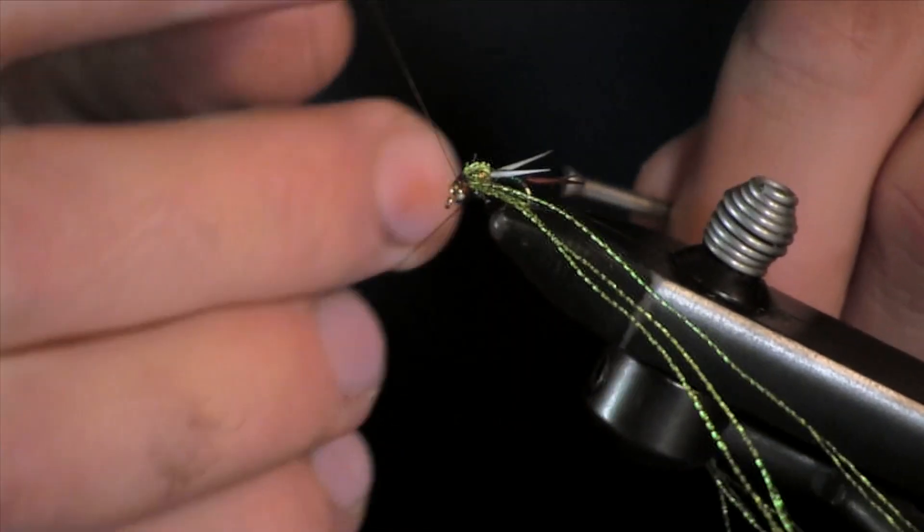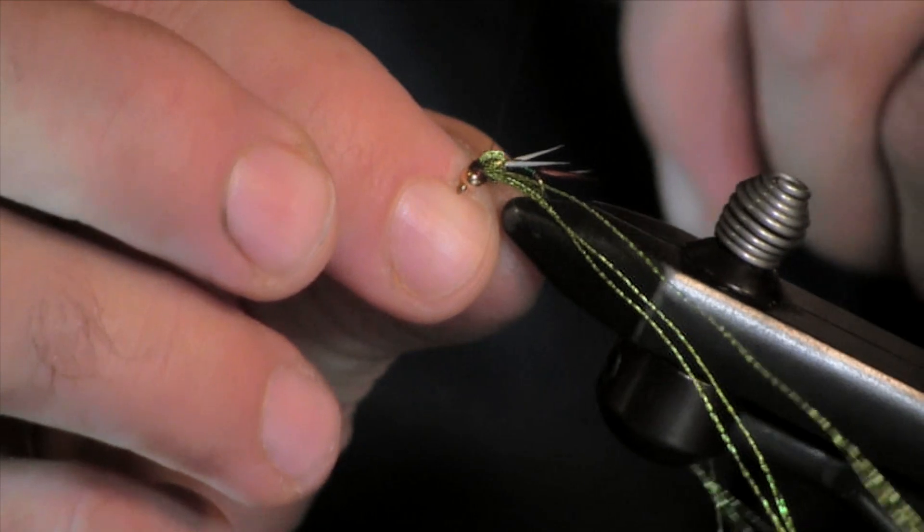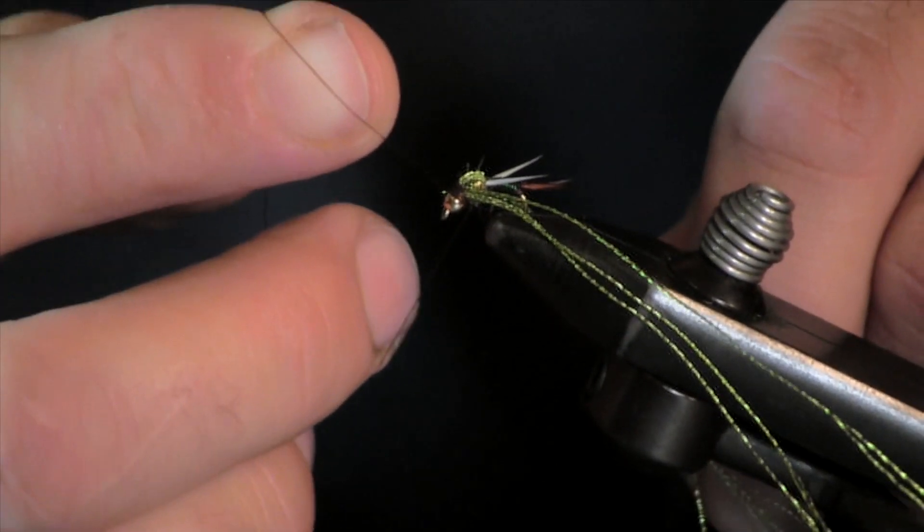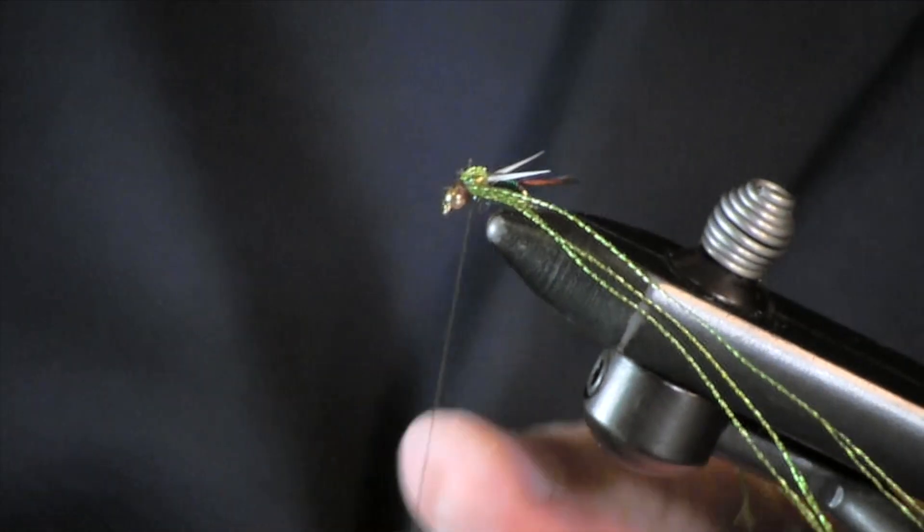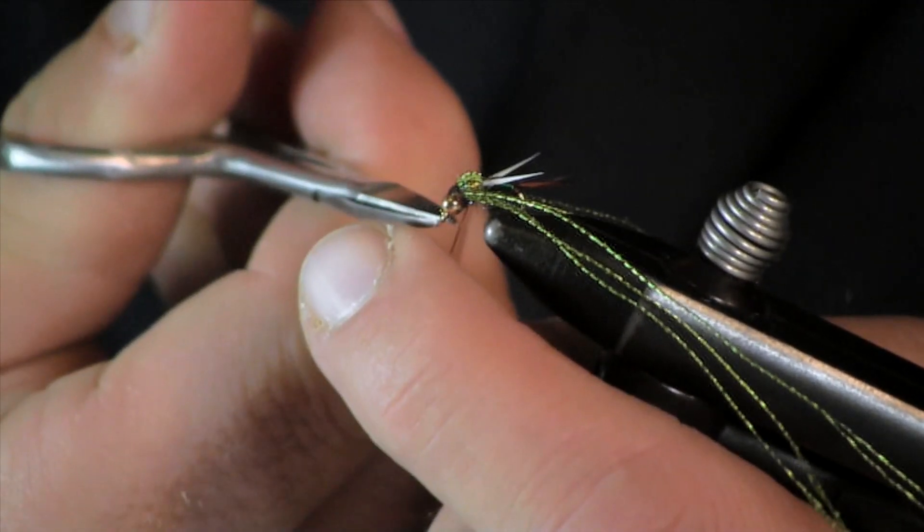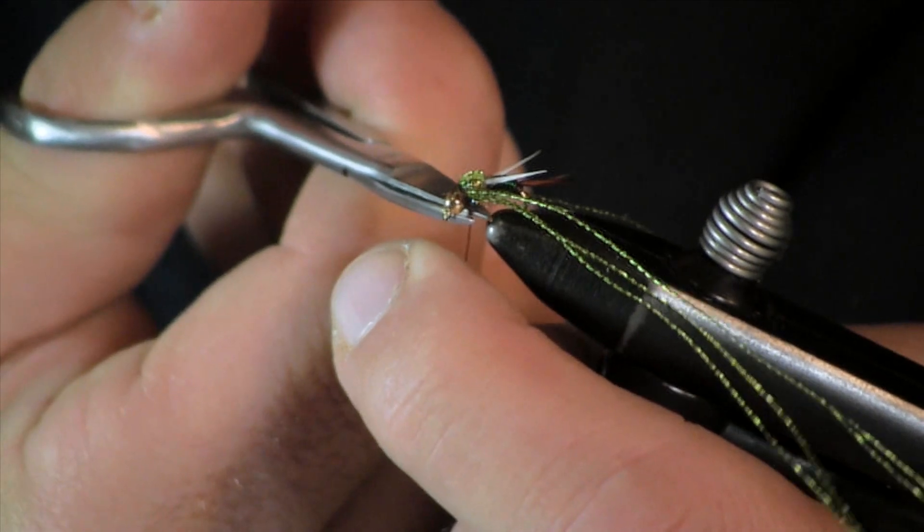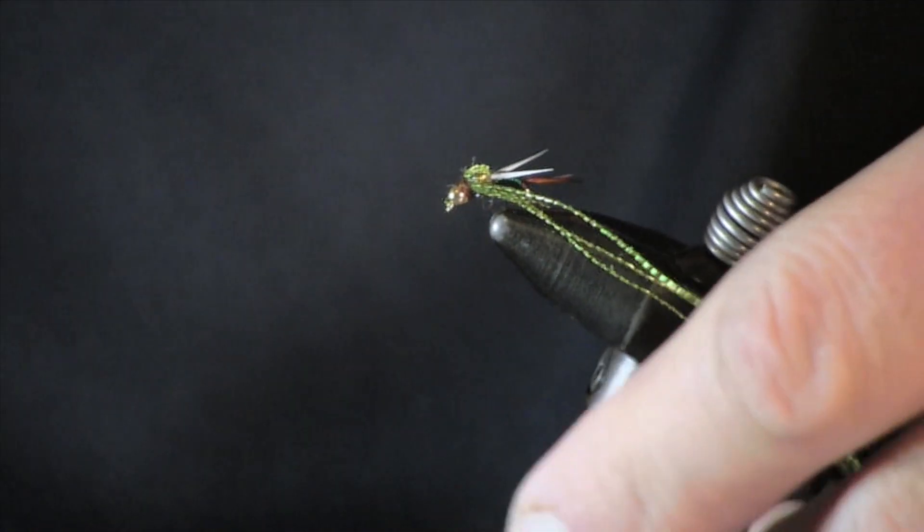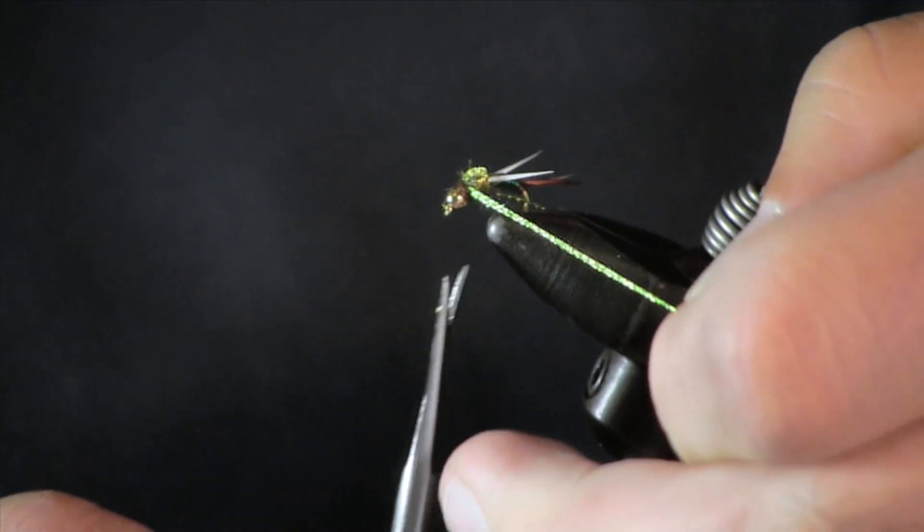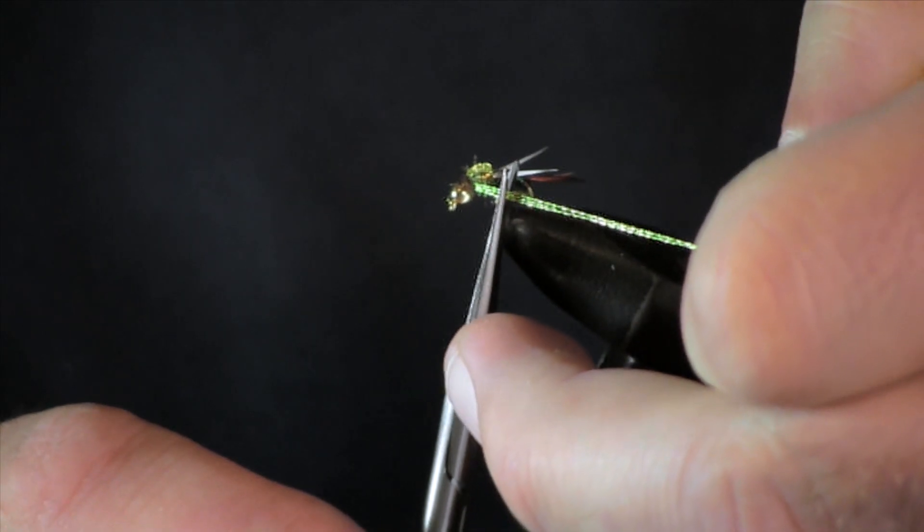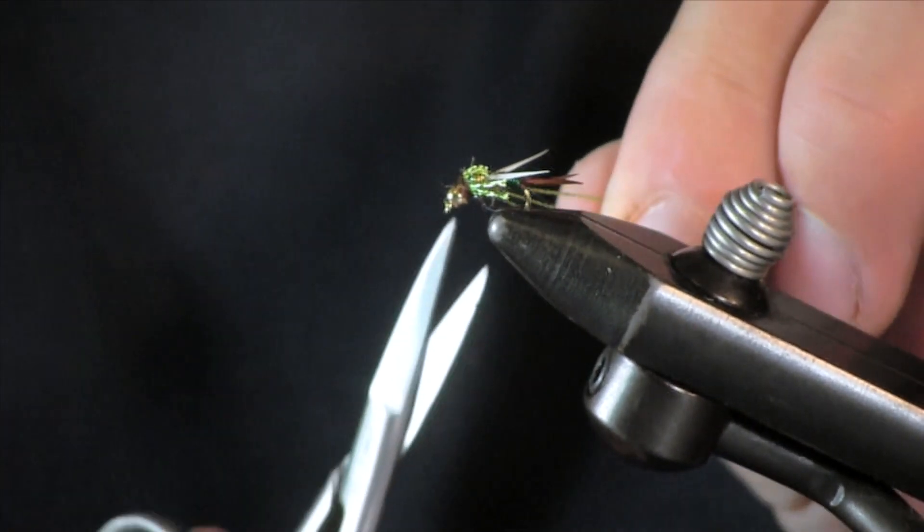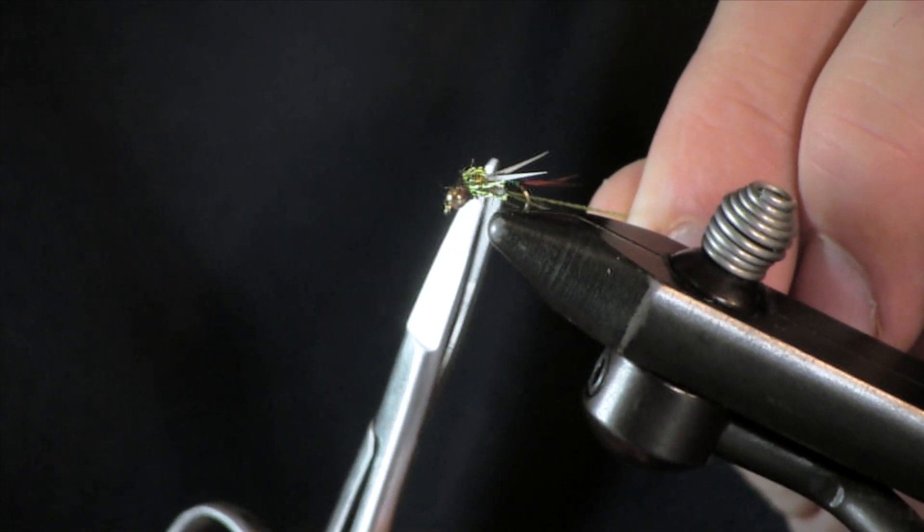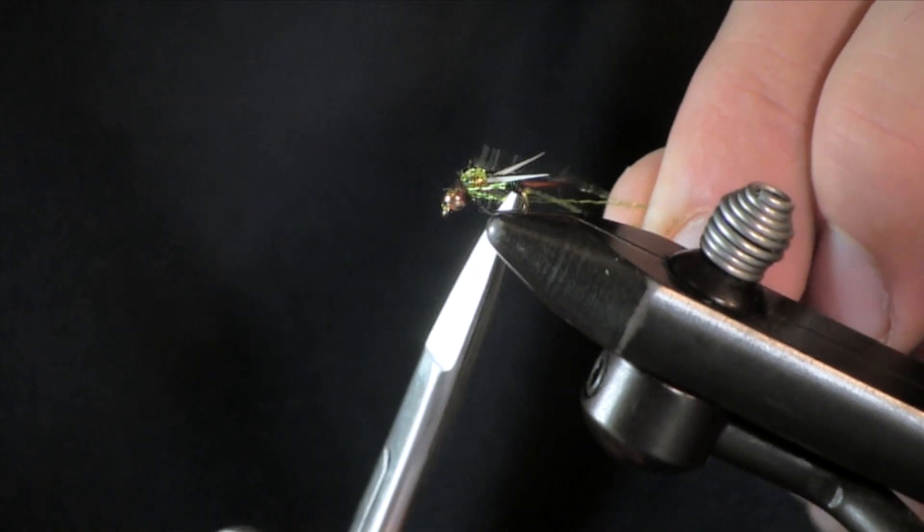Put a couple half hitches on here and tie this off. And then for the legs I am just going to take the pieces you pulled back to the side and trim them off. Trim them off even.